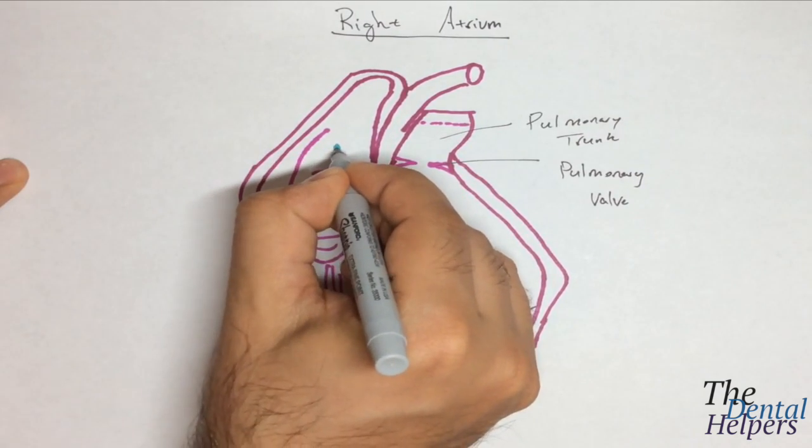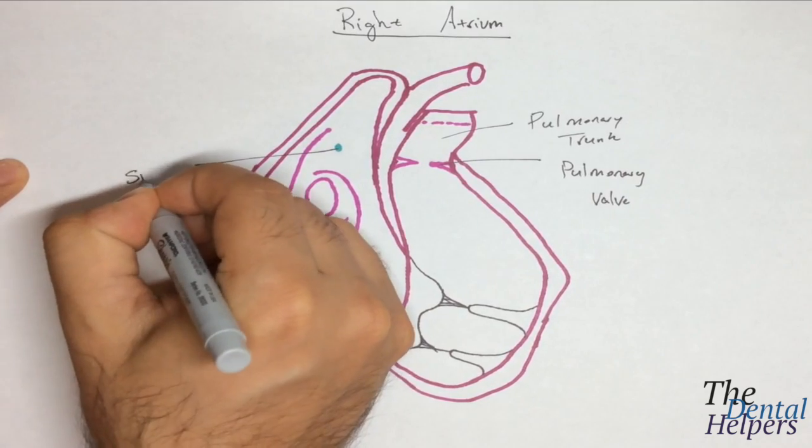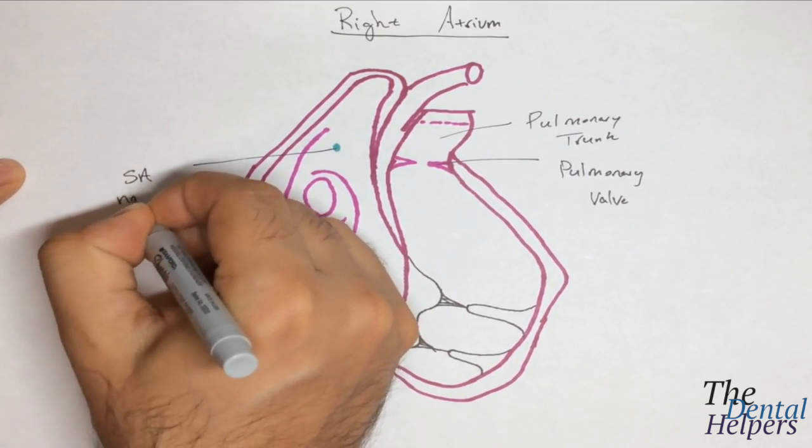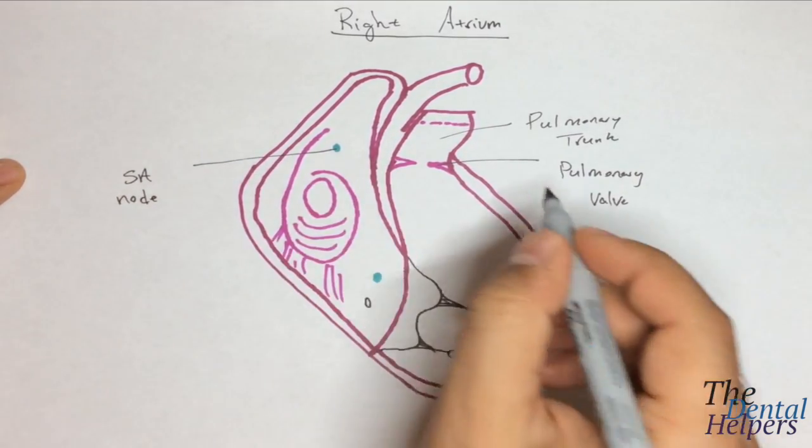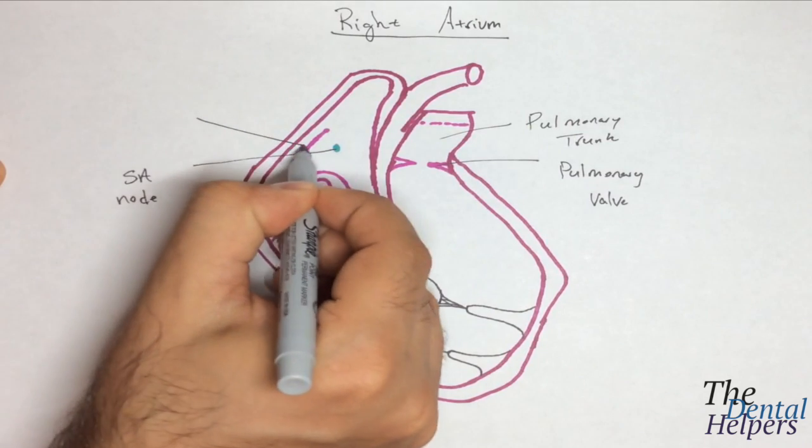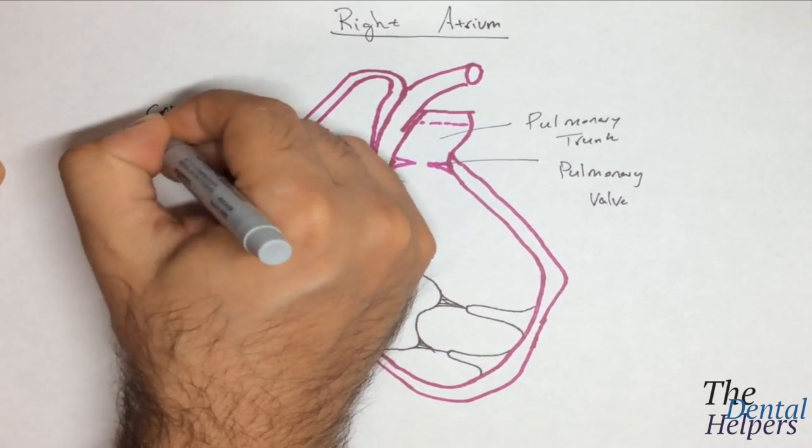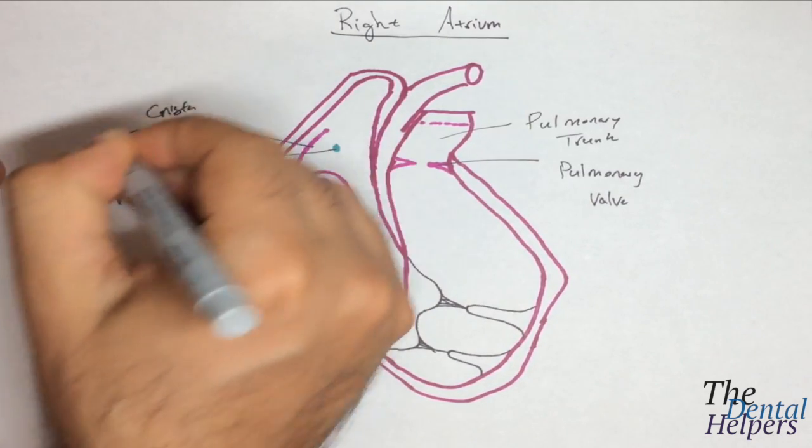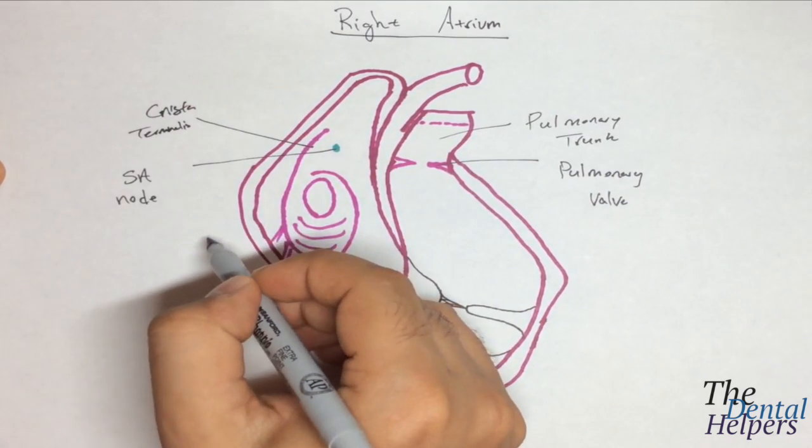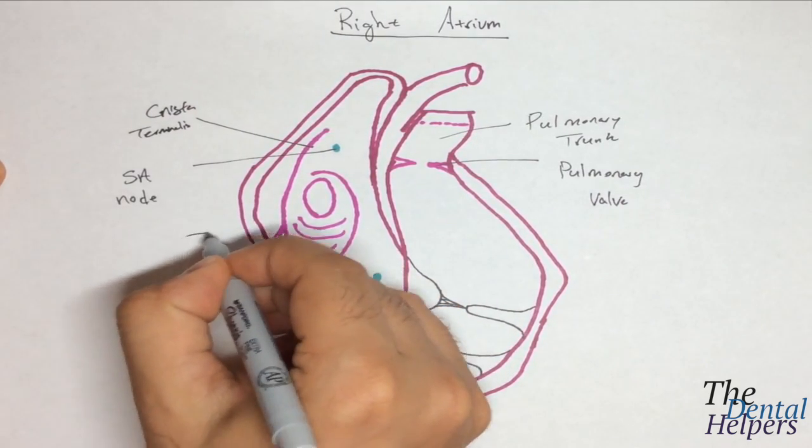We have the SA node that's right here, and you probably know the SA node is the pacemaker. This right here is the crista terminalis. Then we have the fossa ovalis.